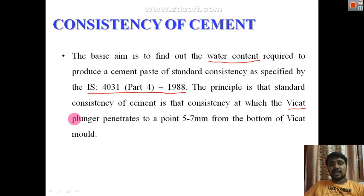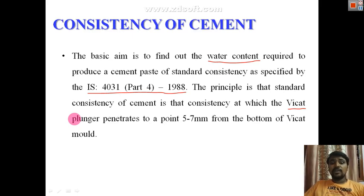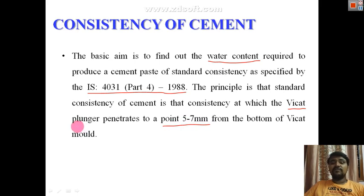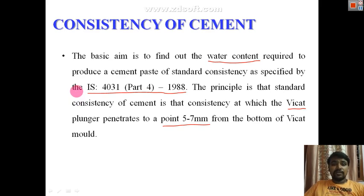For conducting consistency of cement, initial setting time, and final setting time, you require the same apparatus — the Vicat apparatus — for all three tests. The plunger penetrates up to 5 to 7 mm from the bottom of the Vicat mold. Consistency is the quantity of water required to make a standard cement paste.